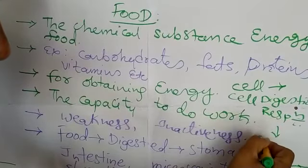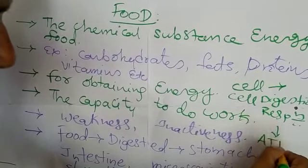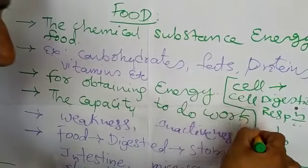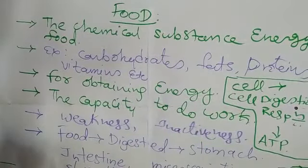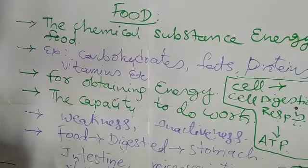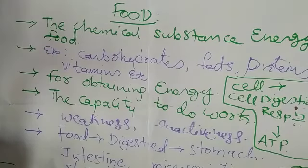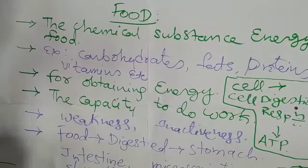The food is converted to chemical energy in the form of ATP — adenosine triphosphate. The food digested in the stomach and small intestine undergoes cellular digestion and respiration and is converted to ATP, along with other undigested waste materials.